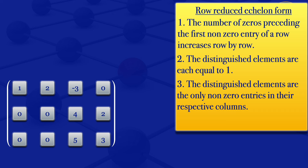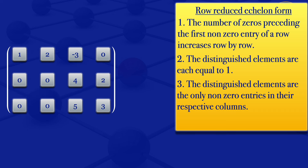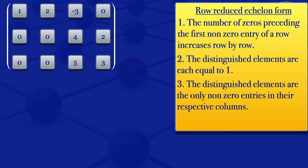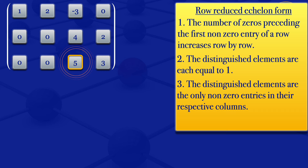So this is the matrix we are having now, and we need to check if it satisfies the first condition. It still does not satisfy that first condition, because the number of zeros preceding the first non-zero entry of a row should increase row by row. If we check row number two, there are two zeros. So for row number three to satisfy condition number one, we should have three zeros, because the number of zeros should increase row by row. So on this part here we should have a zero.